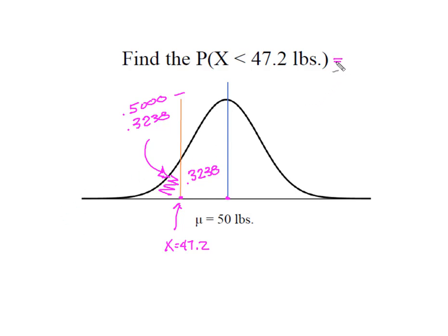And so now I know that the probability that a bulldog weighs less than 47.2 pounds is 17.62%. So that's for a value that falls below the mean.